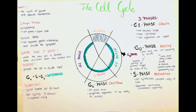To recap: the G1 phase is the growth phase right after division, where the cell reaches its normal size. The S phase is where the DNA is doubled and the centrosomes are duplicated. The G2 phase is where the cell organelles are reorganized.